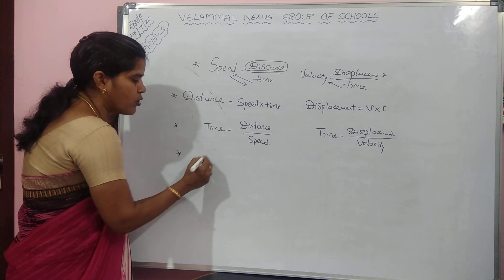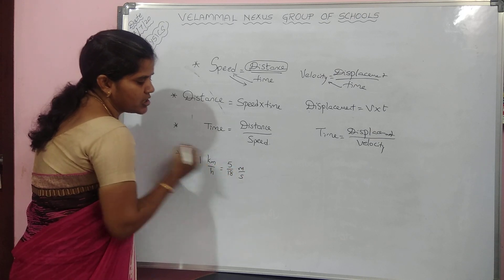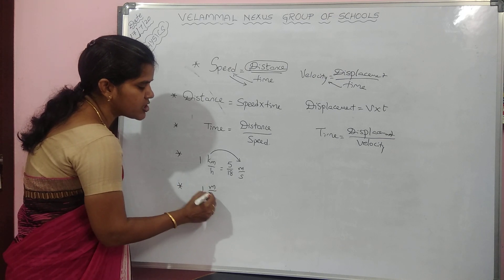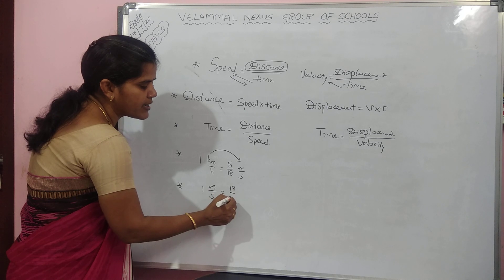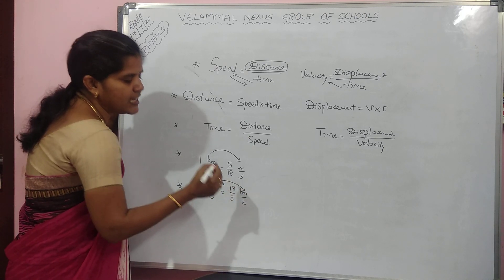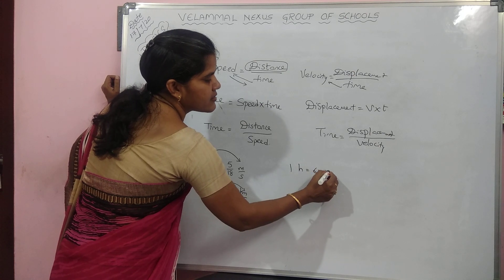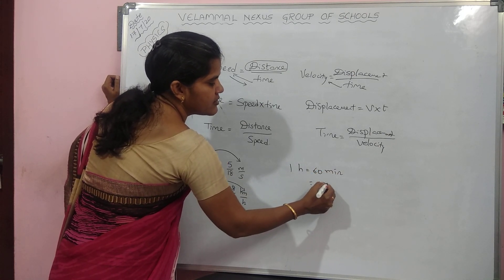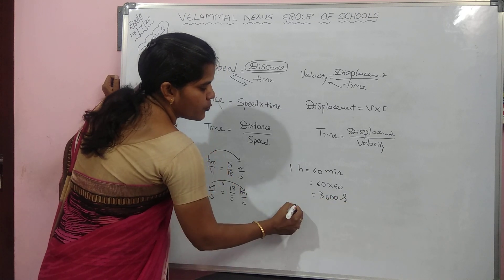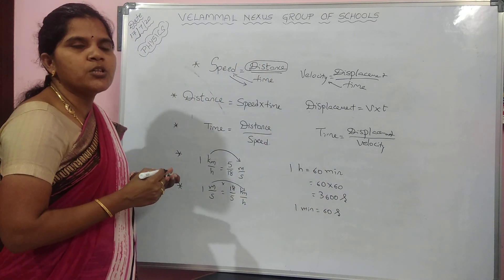If you want to convert km per hour into m per second, you have to multiply with 5 by 18. And 1 m per second is equal to 18 by 5 km per hour. If you want to convert m per second into km per hour, you have to multiply with 18 by 5. Also, 1 hour is equal to 60 minutes, and 60 into 60 is 3600 seconds. If you want to convert minutes into seconds, multiply with 60. With this minimum knowledge you can do the numericals very well.